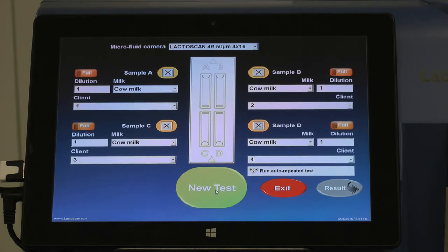Then enter the name of the supplier or choose from the drop-down menu. After entering all the information, press New Test to proceed with the analysis.